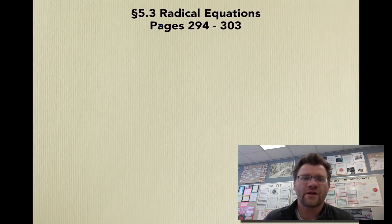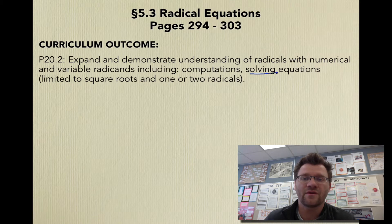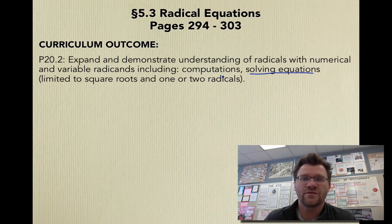Today's topic is 5.3 Radical Equations, found on pages 294 to 303 in your text. Our curriculum outcome is to expand and demonstrate understanding of radicals with numerical and variable radicands, including computations and solving equations. This is limited to square roots and one or two radicals.